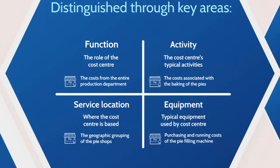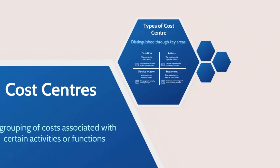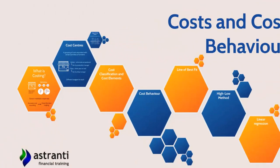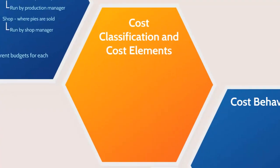We can now see how and why it's useful to group costs together based on common characteristics to form a cost center. But in these examples there are a large number of costs that might be collected in one single cost center, and before we do that we might want to look at a system for collecting and sorting costs on a smaller scale. This is where we move on to look at cost classification and cost elements.